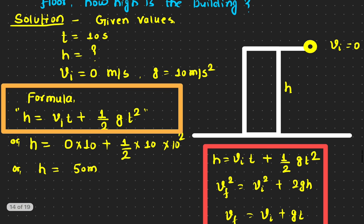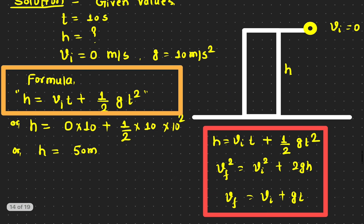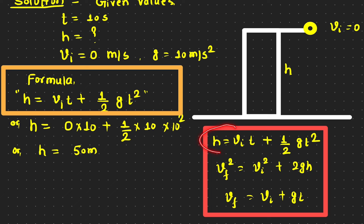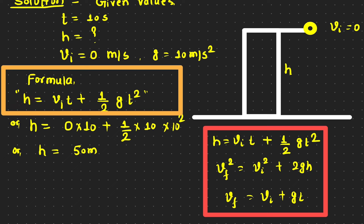Here are the three kinematic equations. Out of these three, you have to pick one. Because we have the time given, we look for an equation that involves time and also the height. The first equation has time but not height, so we can't use it. The second has height but no time, so we can't use that either. The third equation has both height and time, so we're going to use that one.